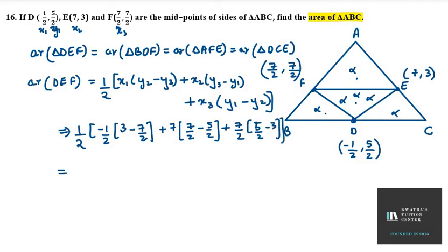Now we have 1/2. Then we have minus 1/2. Now we solve this bracket. We solve 3 minus 7/2.